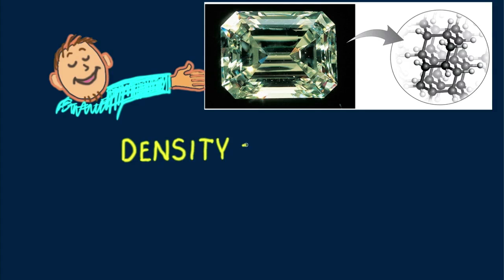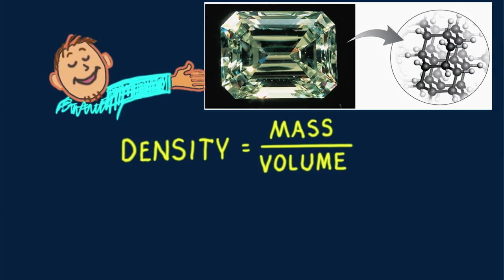One way to describe a solid is by its density. Density is the ratio of mass to volume. Density is a property of a material. It's how much matter can be squeezed into a given space regardless of the amount of material.